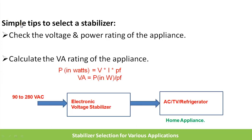Here are simple tips to select a stabilizer. First, note down the voltage and power rating of the appliance — for most appliances the power rating is specified in watts. We need to calculate the power in VA by dividing watts by the power factor to get the VA rating. If you want the current in amps, divide the VA rating by the voltage.